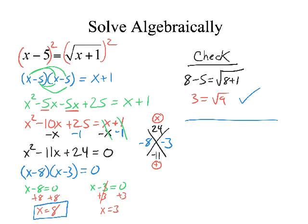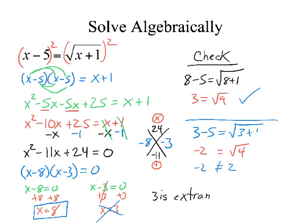All right. Let's check the other one. Check 3. So we have 3 minus 5 is equal to the square root of 3 plus 1. 3 minus 5 is negative 2. That equals the square root of 4. That doesn't make any sense. Negative 2 does not equal 2. So what that means is this is not a solution.